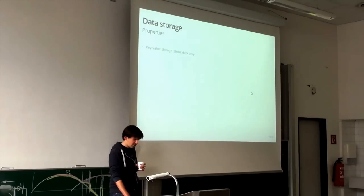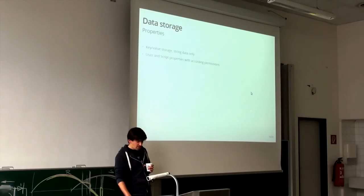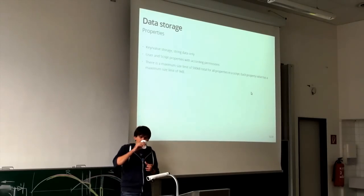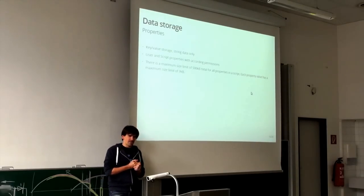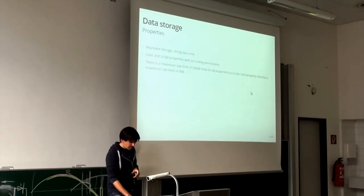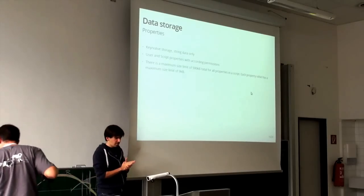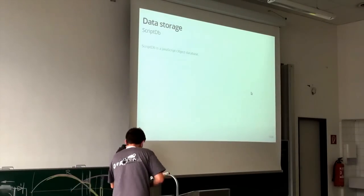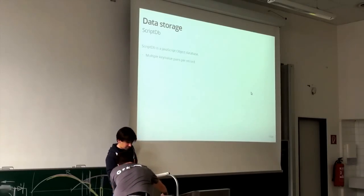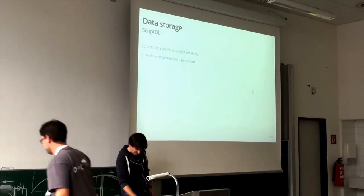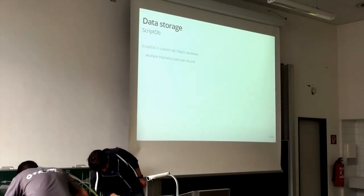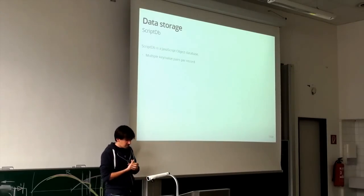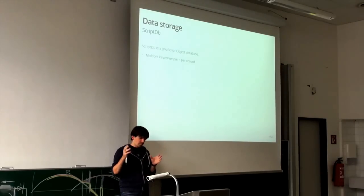There are Properties inside Apps Script — just a key-value storage where you can store strings. It's something you would use for settings. This is not very big: a maximum of 500 kilobytes of information, and each record can only be as big as 9 kilobytes. The next one is ScriptDB — also a key-value data storage, but you can store very big objects inside it. It's basically like a NoSQL database. One script has only one instance of this database, always attached to the script. So if someone runs your script from another account, they work with the same instance of the database — a central storage of data.